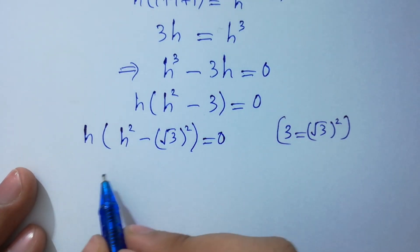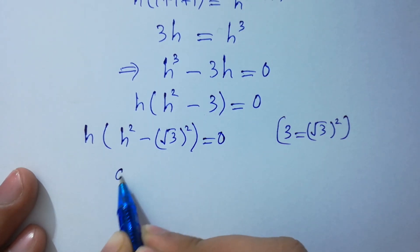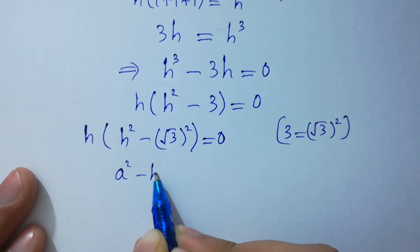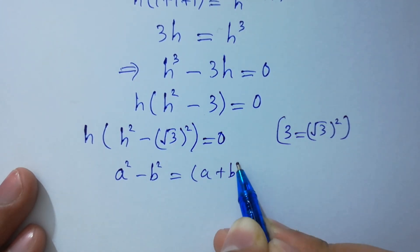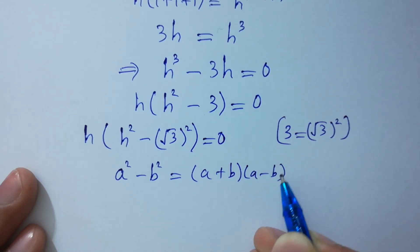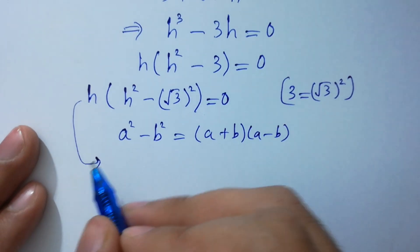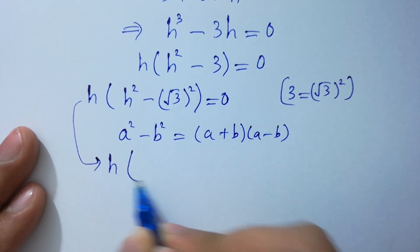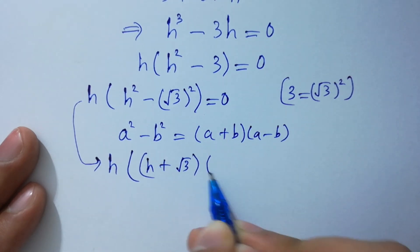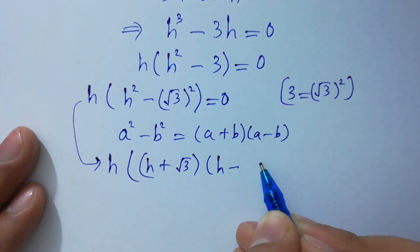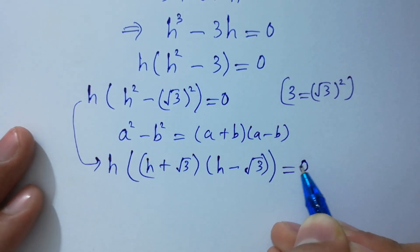As we know that a² minus b² equals (a plus b)(a minus b), so h² minus (√3)² becomes (h plus √3)(h minus √3). Therefore the full factored form is h times (h plus √3) times (h minus √3) equal to 0.